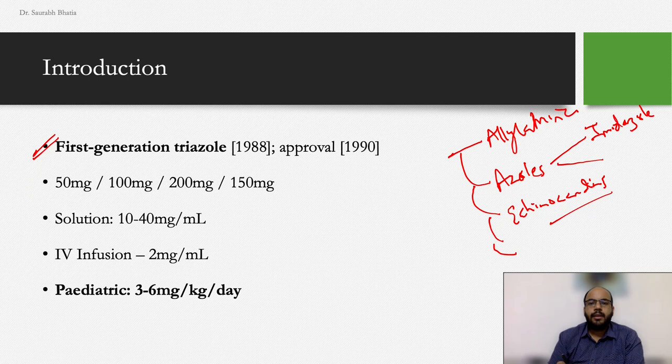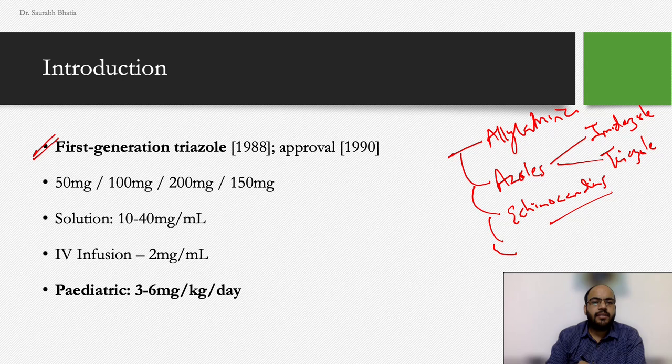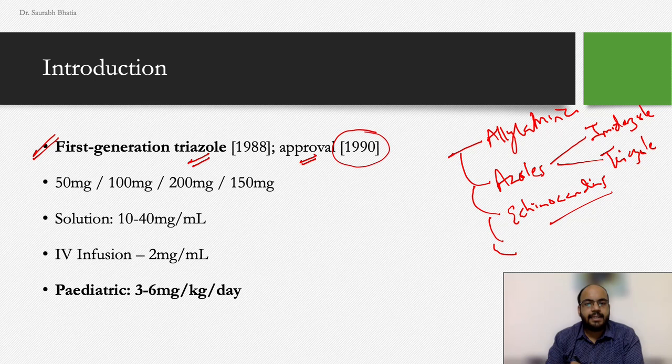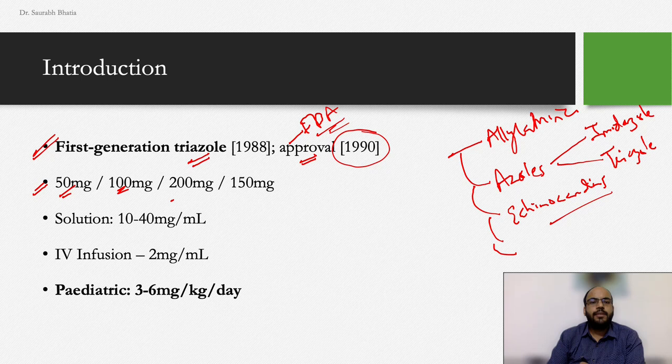Fluconazole is a first-generation triazole and received FDA approval for use in fungal infections in 1990. It is available as tablets in concentrations of 50 mg, 100 mg, 150 mg, and 200 mg. We use various combinations when using higher doses.